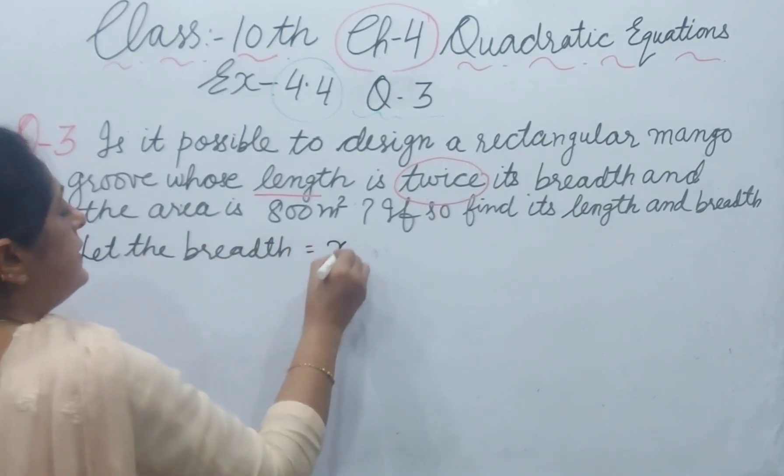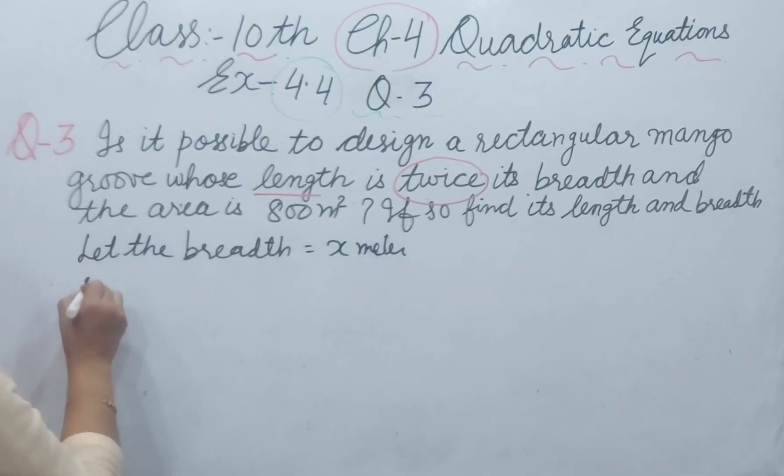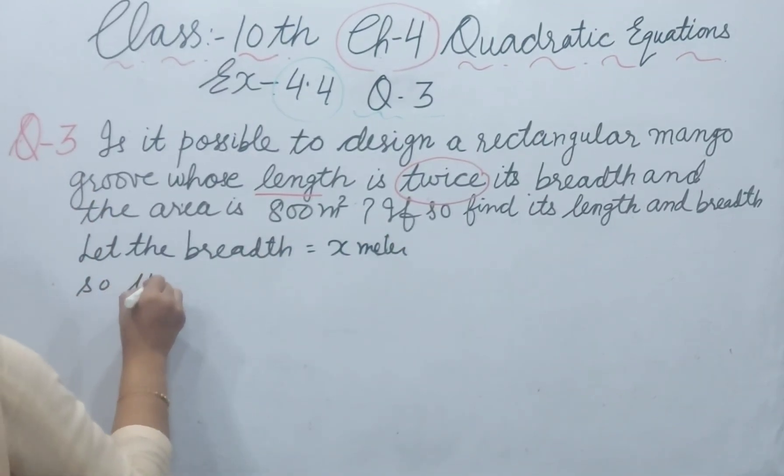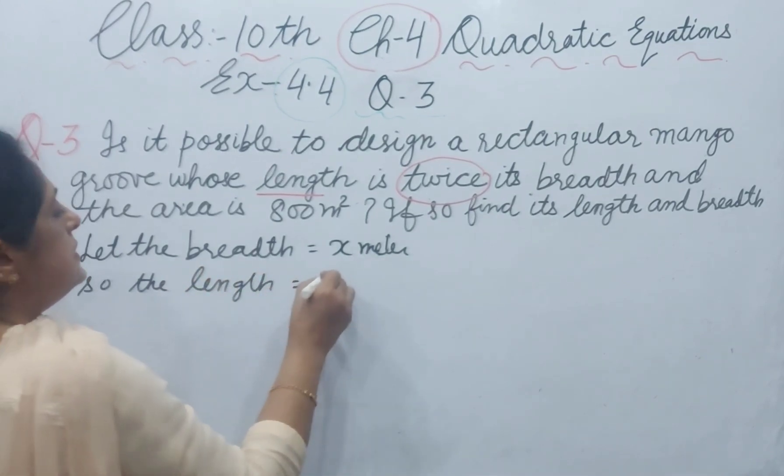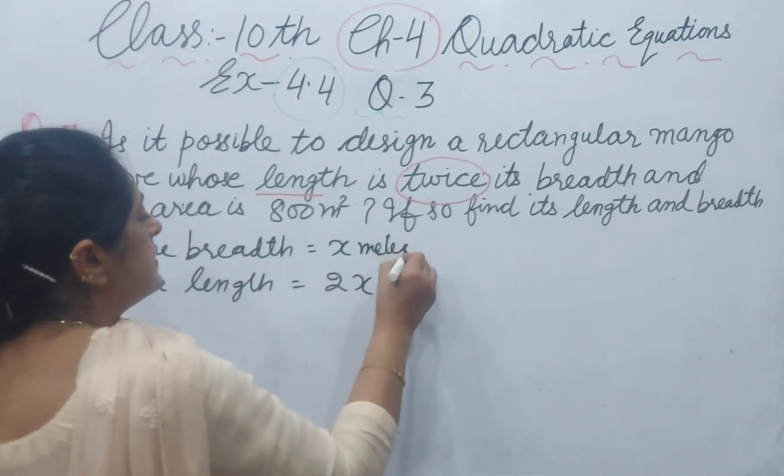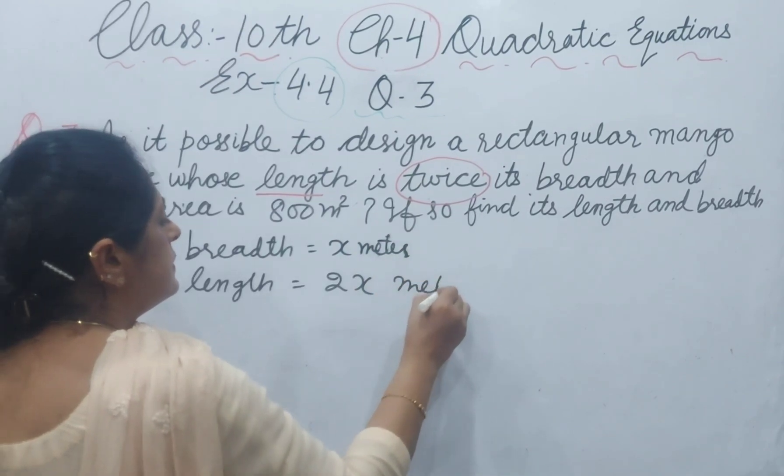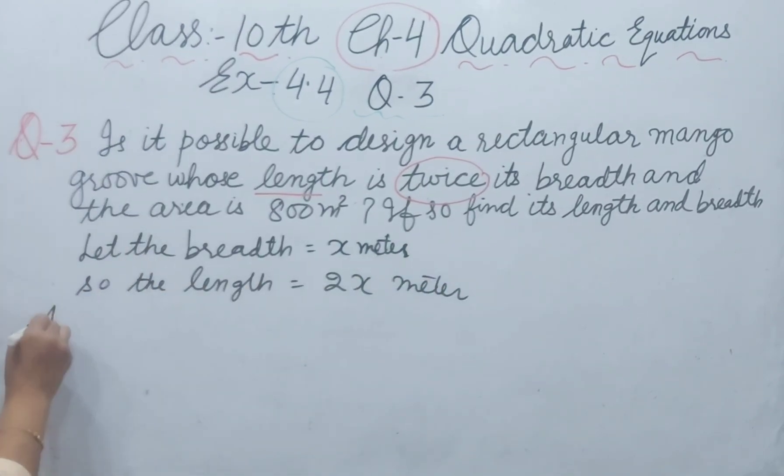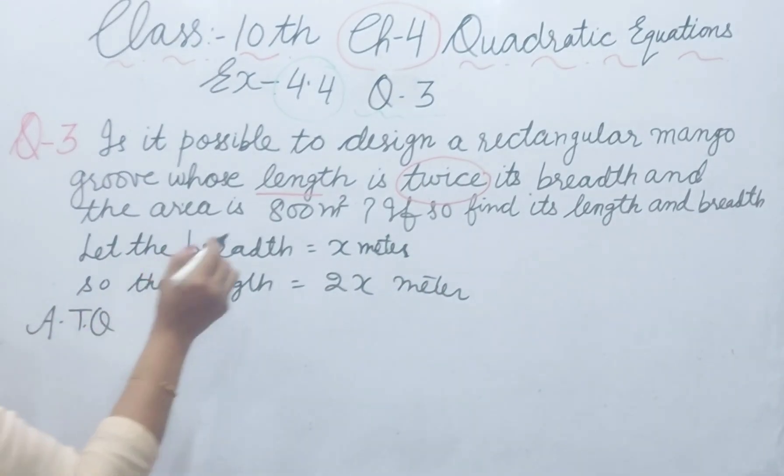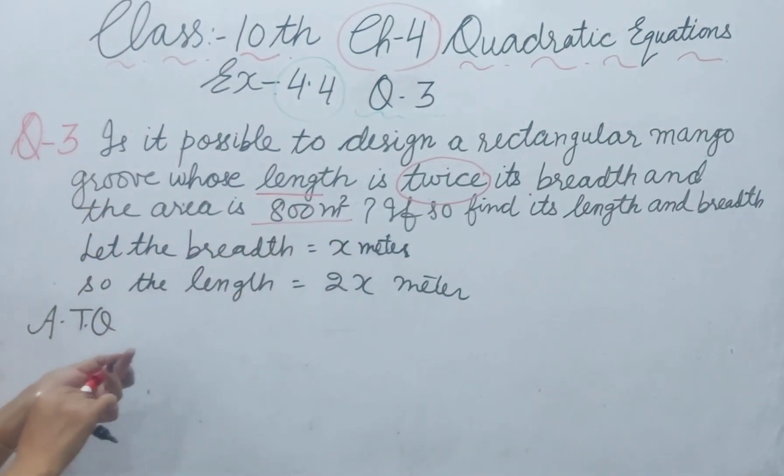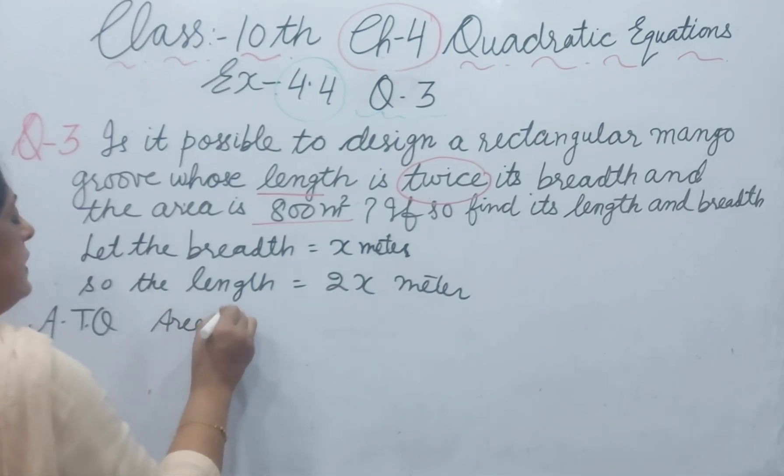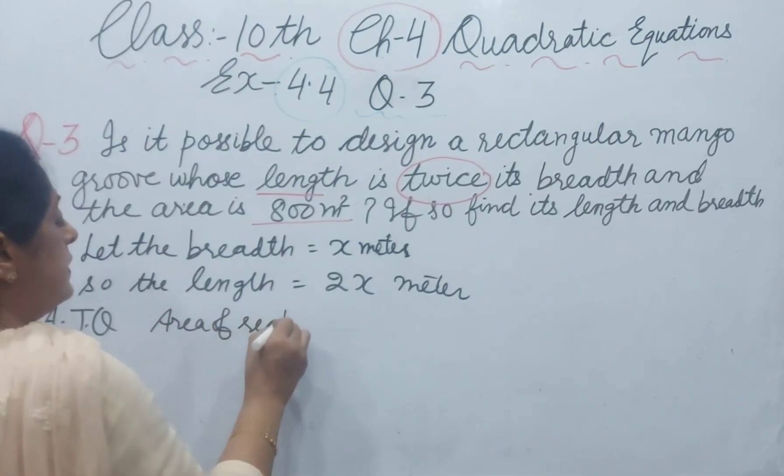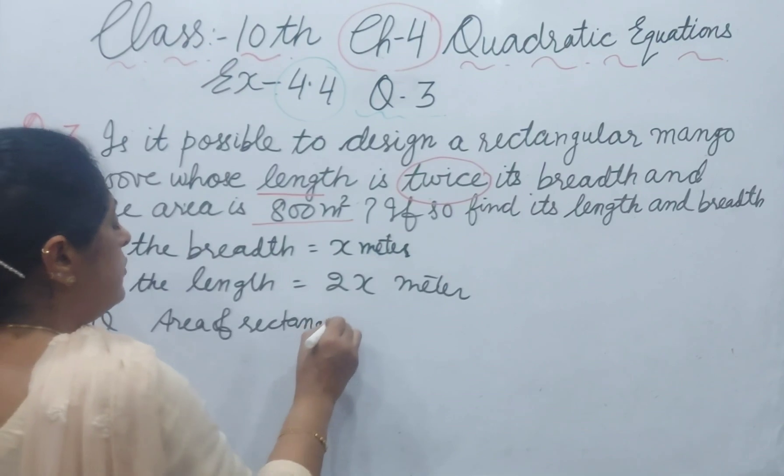So the length is double, which means 2x meter. According to the question, area is given as 800 meter square. Area of rectangular groove